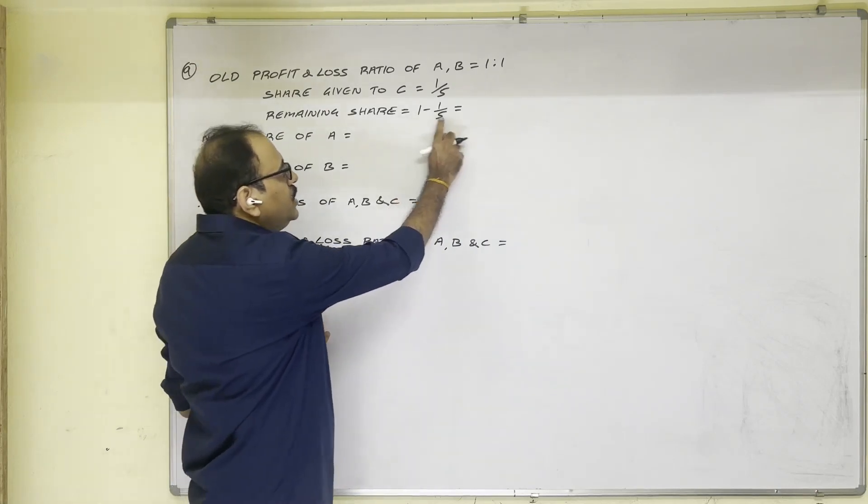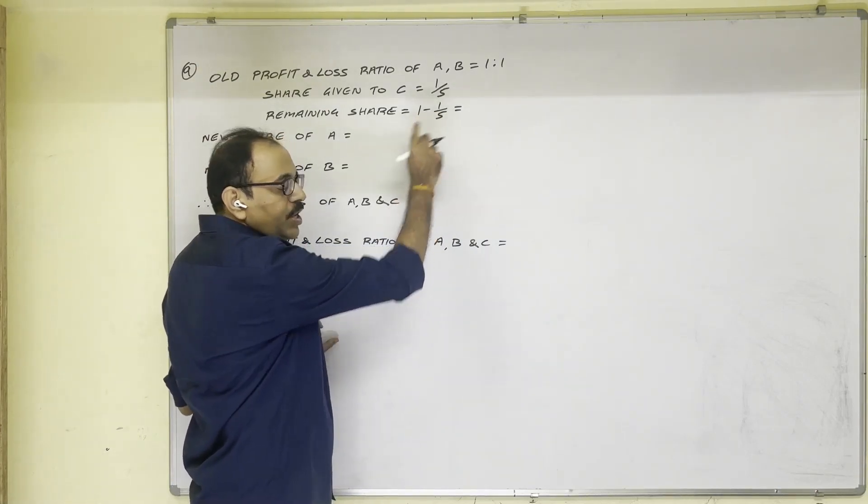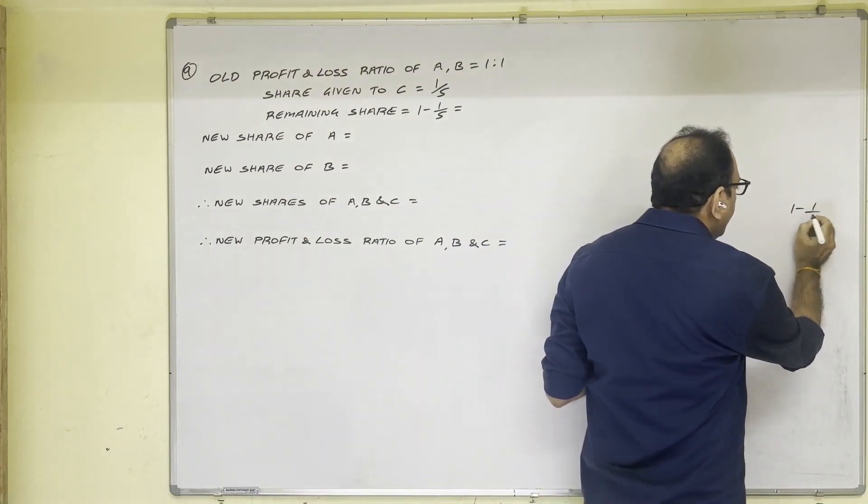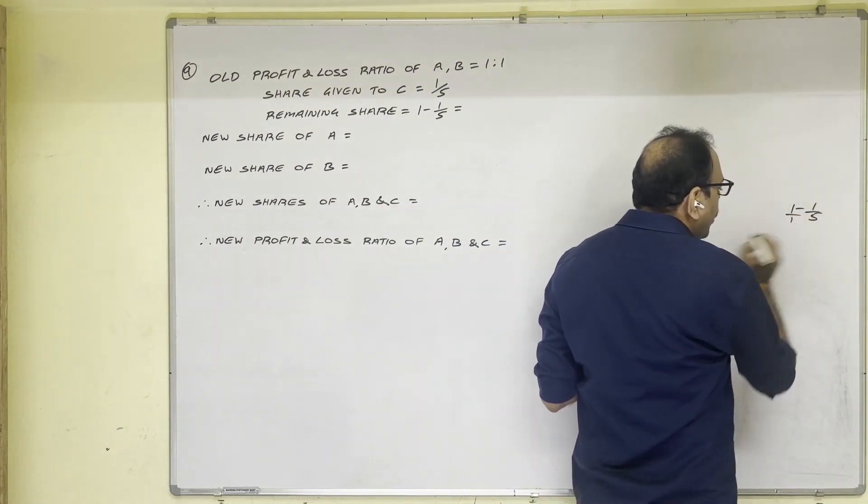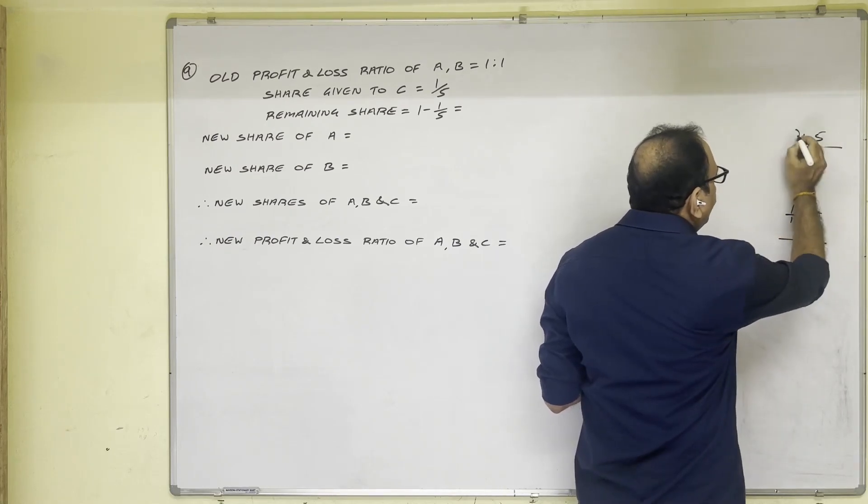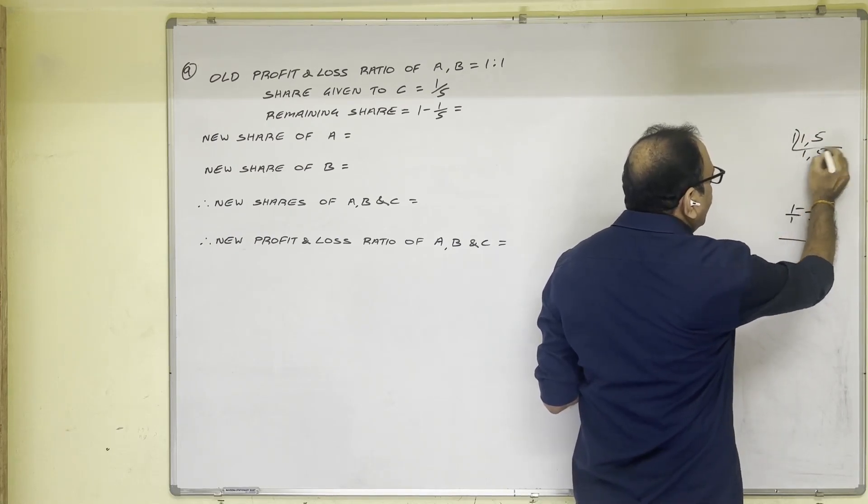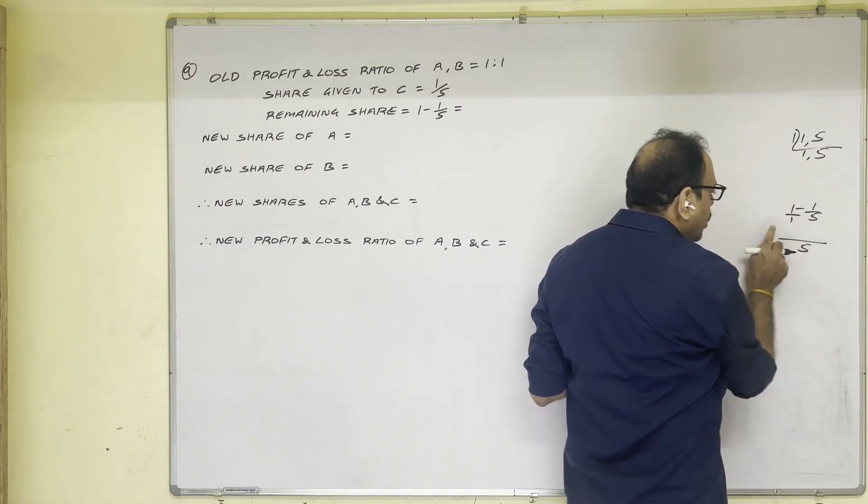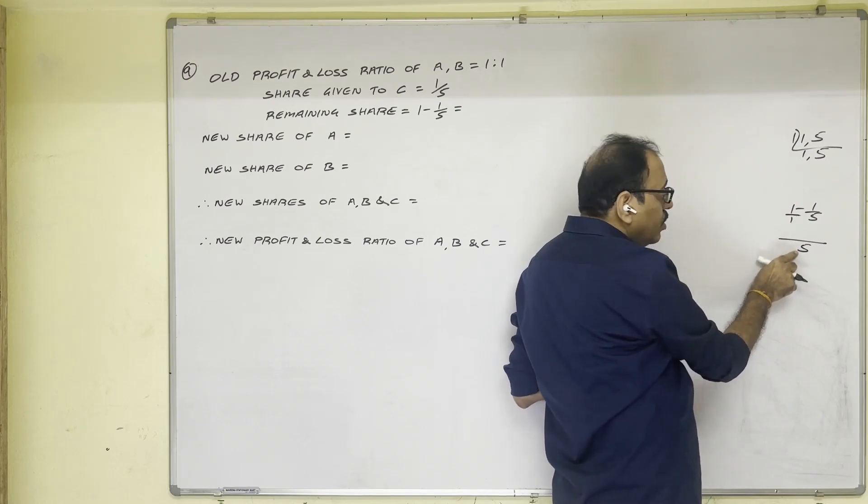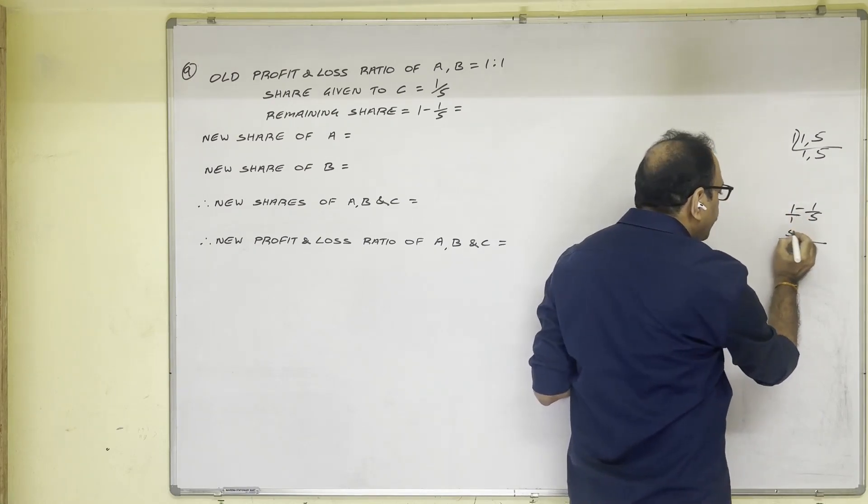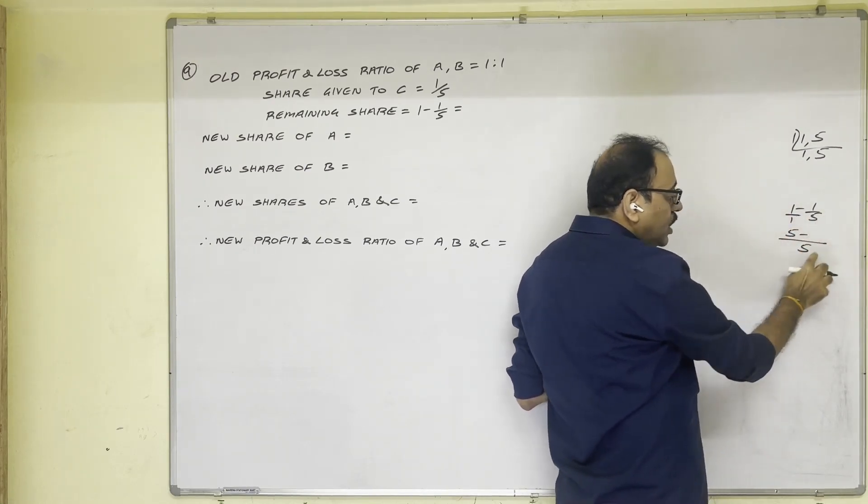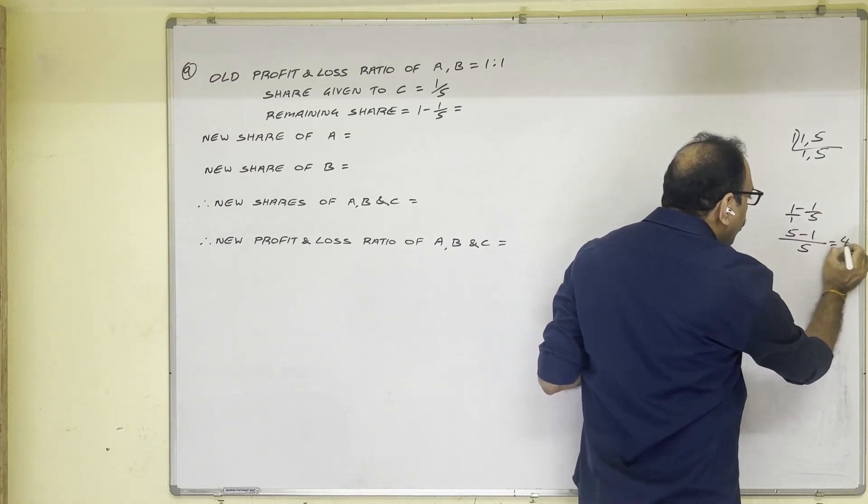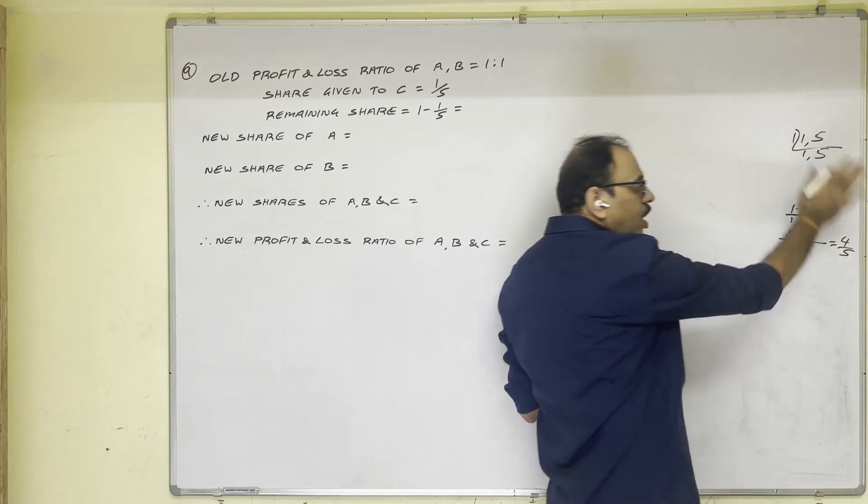So 1 minus 1/5. Actually speaking LCM we should do. I will show here. 1 minus 1/5. Here 1/1 will be there. 1, 5. With 1 and 1. 1 1s are 1, 5s are. 1 into 1 is 1. 1 into 5 is 5. LCM is 5. 1 5s are 5. 5 into 1 is 5. Minus 5 1s are 5. 1 into 1 is 1 equals 4/5.